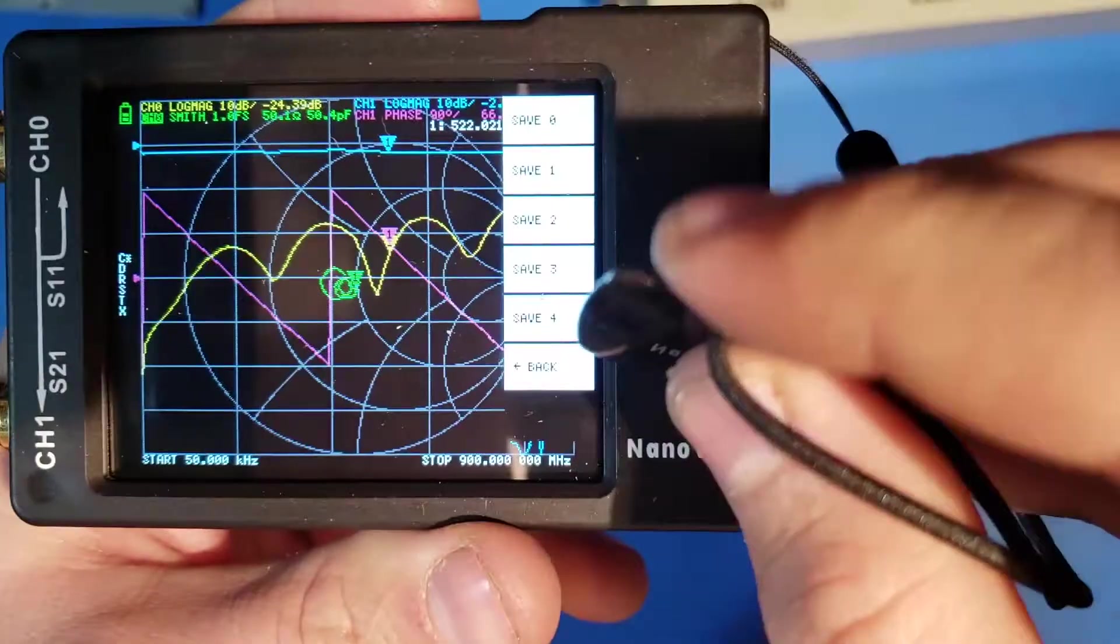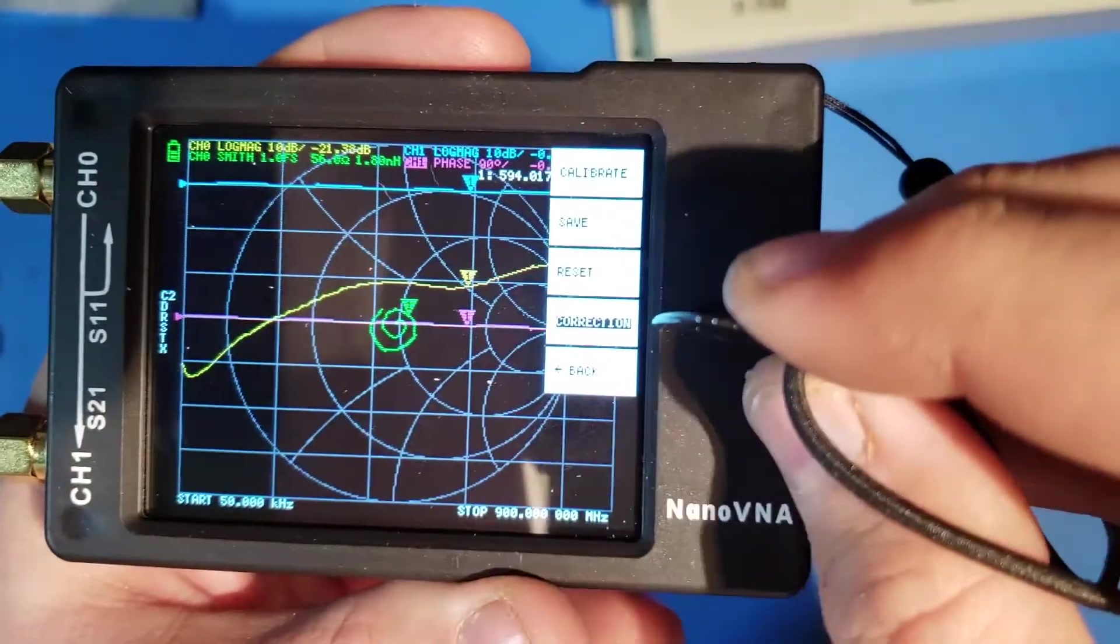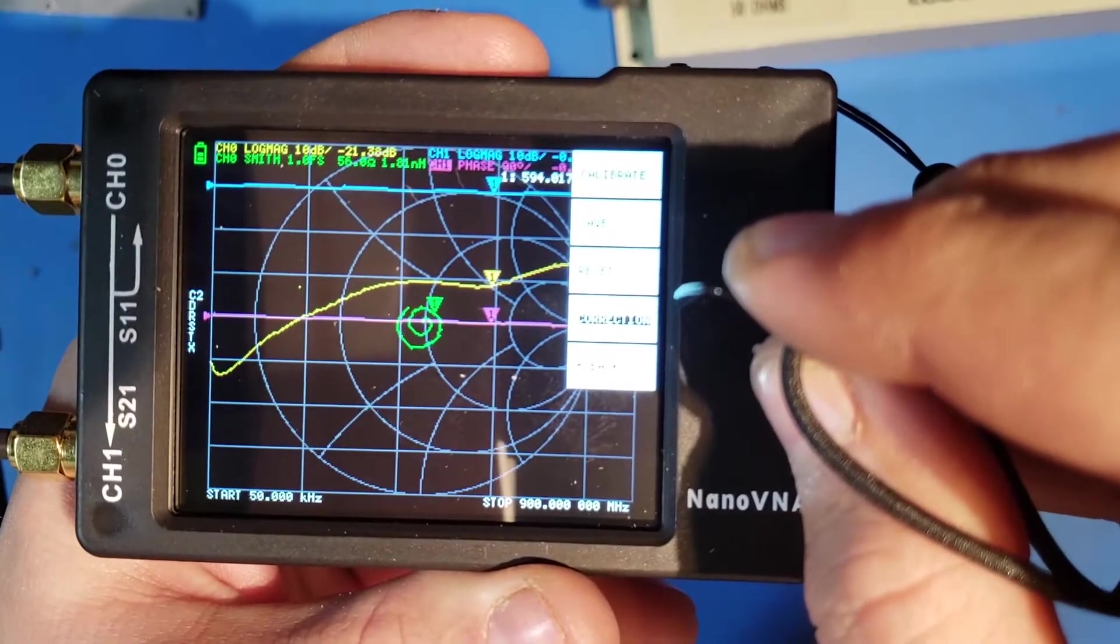And then we're going to press the done button. We'll save that and save two. And now, if we open up the menu, we should see that the correction is, in fact, on.